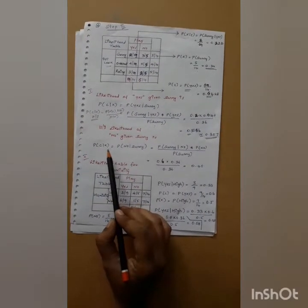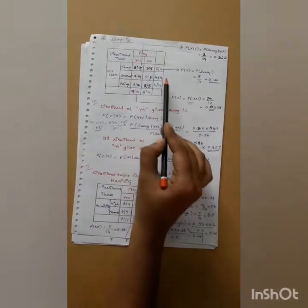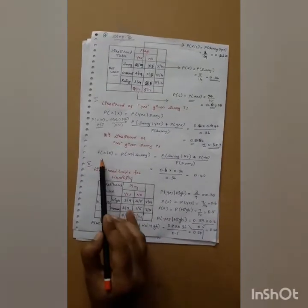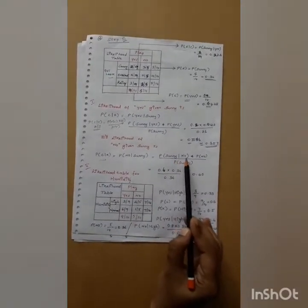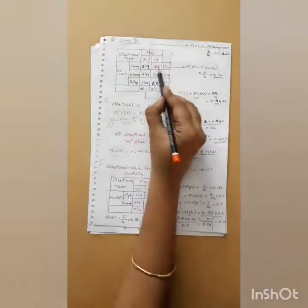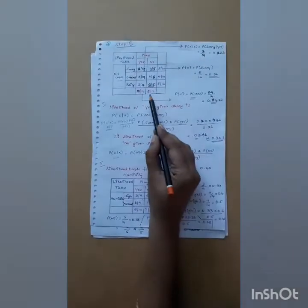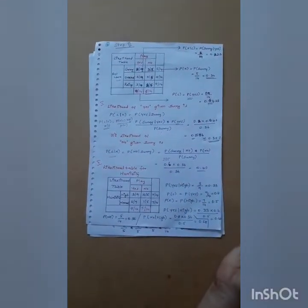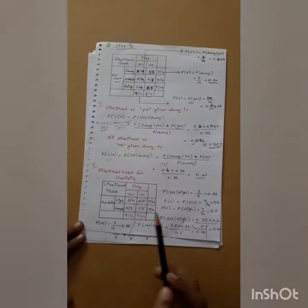Similarly, we compute the likelihood of no given sunny. The probability of sunny when the condition is no is 3 divided by 5, which is 0.6. Multiplying 0.6 by 0.36 (which is 5 by 14) and dividing by 0.36 gives a value of 0.40. The same approach is used to compute the likelihood table for humidity and wind.